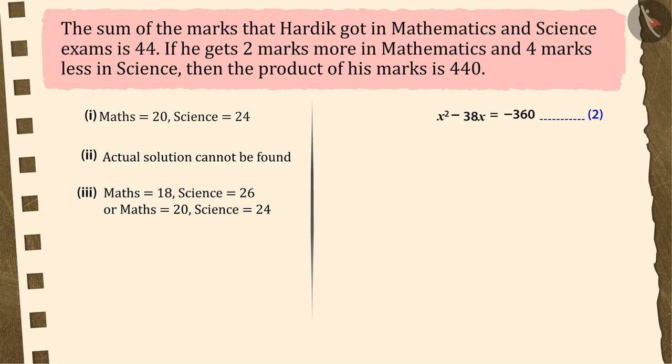Can you guess what we should do next? To find out the mathematics marks, we will solve equation 2 in which coefficient of x is minus 38 and we divide it by 2. Thus, we get minus 19. We will now add and subtract the square of minus 19 to the left side of equation 2 so that the equation remains balanced.